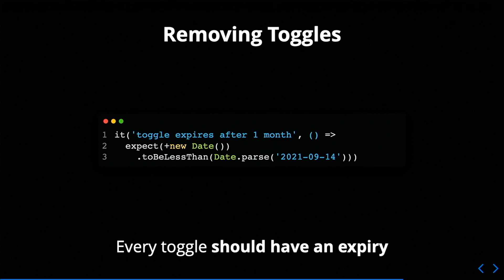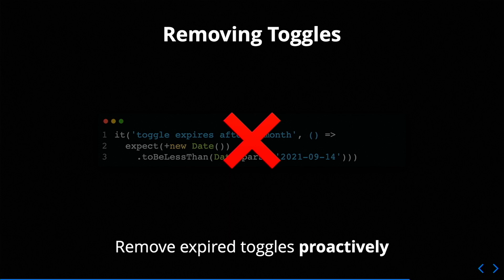So we want to be removing toggles where we can. In all three of those cases, we can remove that feature toggle if it's been around for a very long period of time. Every feature toggle should have an expiry. Here's an interesting piece of code — a test that fails if your feature toggle is still in the system after one month. I wouldn't recommend doing this because developers will just remove that test, or change the date. So the best way to approach this instead is to remove feature toggles proactively — make an effort to do it, go and check if anything's still in use, and do it yourself.